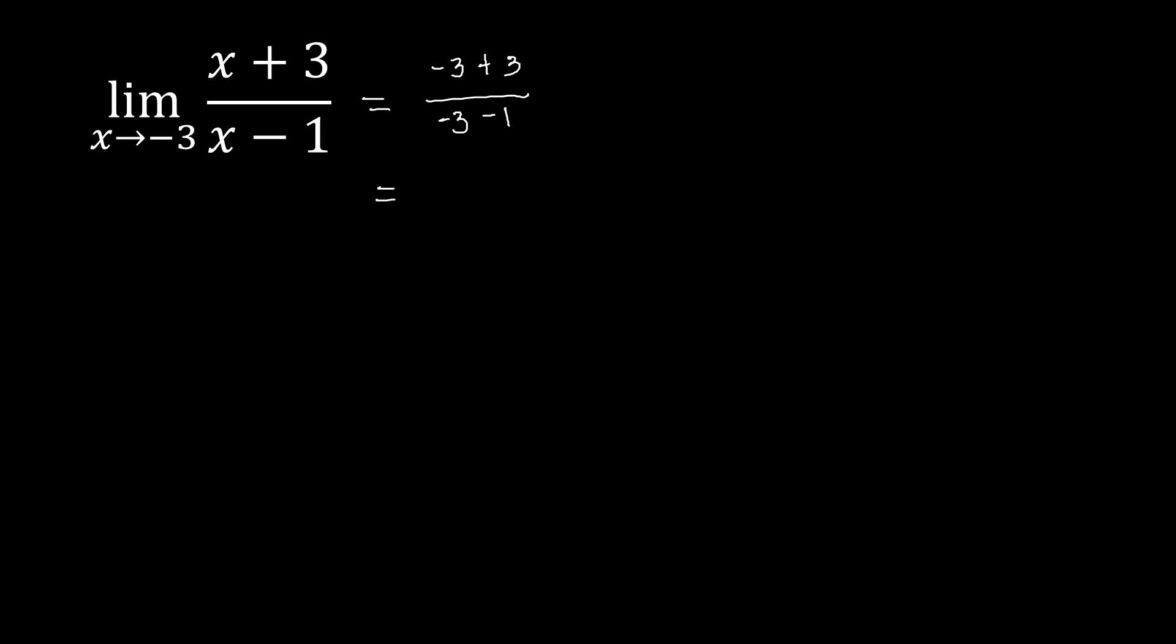This is now equivalent to -3 + 3, that's 0 over -3 - 1, that's -4. 0 over -4. 0 over a number, any number, means that is equivalent to 0. So this is now 0.